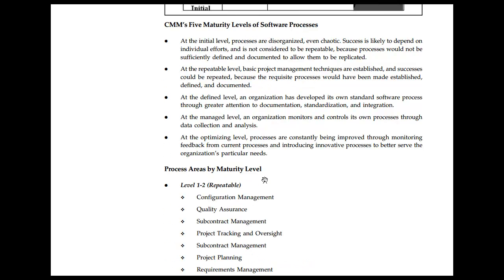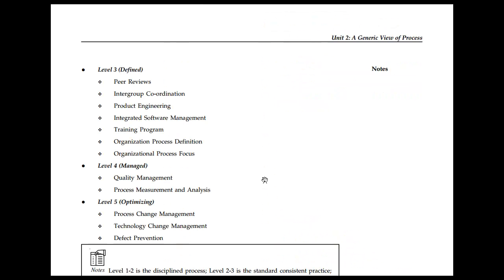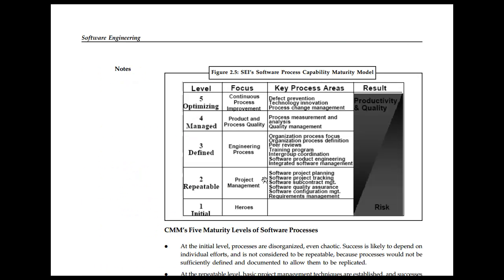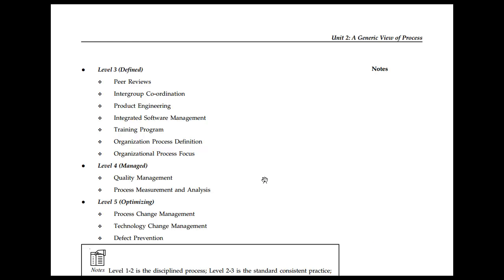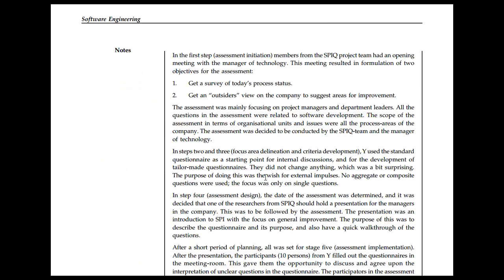Level three, Defined, includes practices such as peer review, integrated product design, and integrated processes. Level four, Managed, focuses on product and process quality. Level five, Optimizing, focuses on continuous process improvement and optimization.